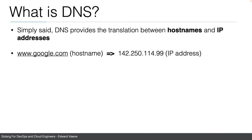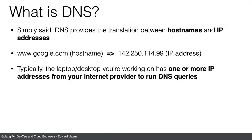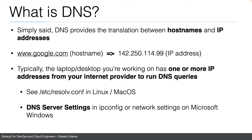Typically, the laptop or desktop you're working on has one or more IP addresses from your internet provider to run DNS queries. The server you call to do these DNS queries is typically provided by your internet provider. In Linux and Mac OS, you'll find this in /etc/resolv.conf, and on Windows it's in the DNS server settings — you can check with ipconfig or go to the network settings.